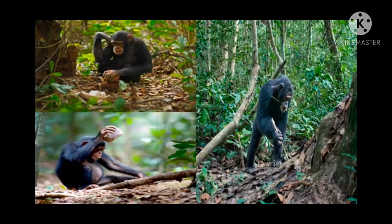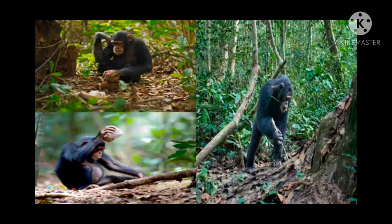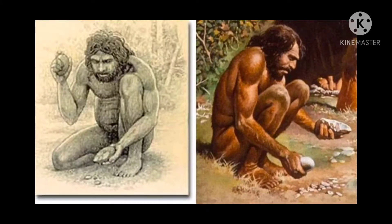In this slide we can see a chimpanzee using a stone for various activities and also using a stick to remove ants from an ant hole. It is believed that homo habilis made stone tools as well as tools from other materials. However, of all the tools made by humans, only stone tools are found in excavations.